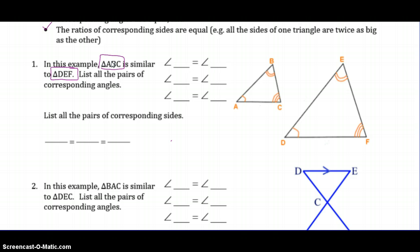So when they give you this similarity statement, they're telling you some really important information. Because it's already stated, the order that the letters go in is actually really important. So the first triangle ABC is this guy right here, ABC.